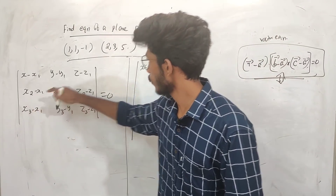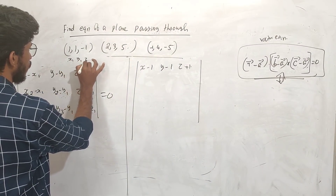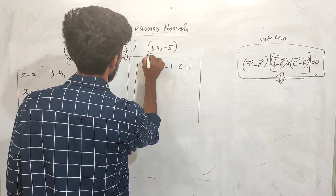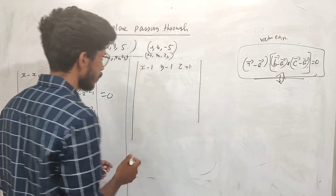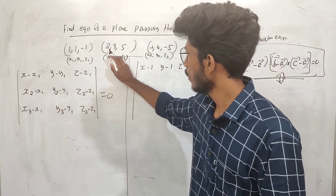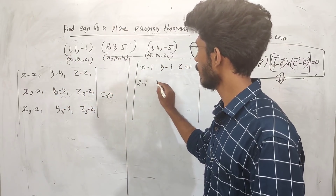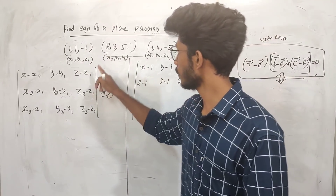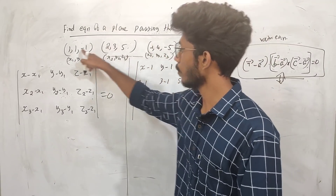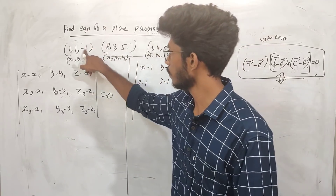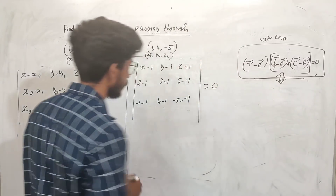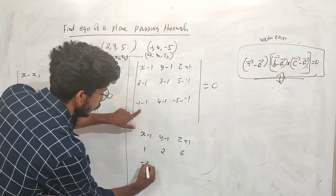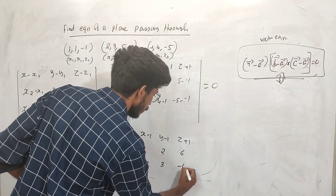Then x2 − x1 = 2 − 1 = 1, y2 − y1 = 3 − 1 = 2, z2 − z1 = 6. And x3 − x1 = −2 − 1 = −3, y3 − y1 = 4 − 1 = 3, z3 − z1 = −5 − (−1) = −4 + 1. The determinant equals zero: | (x−1), (y−1), (z+1) | | 1, 2, 6 | | −2, 3, −4 | = 0. You expand this determinant to get the Cartesian equation of the plane.